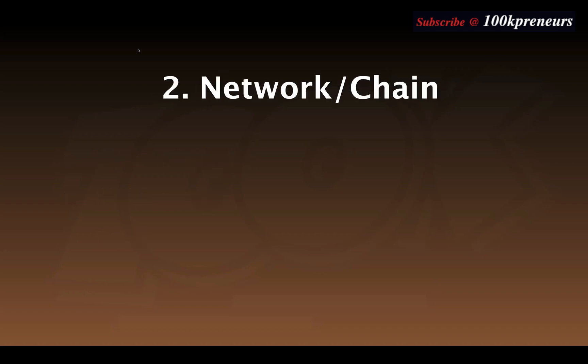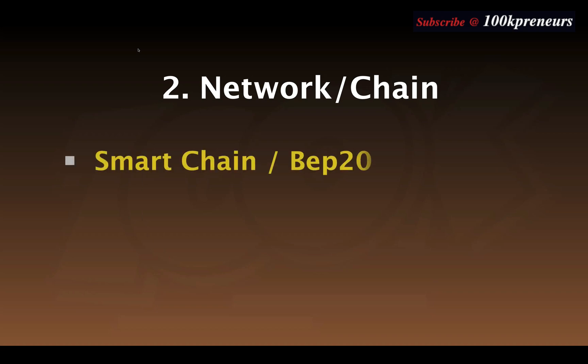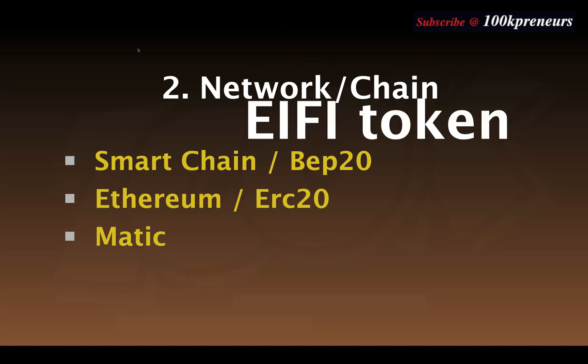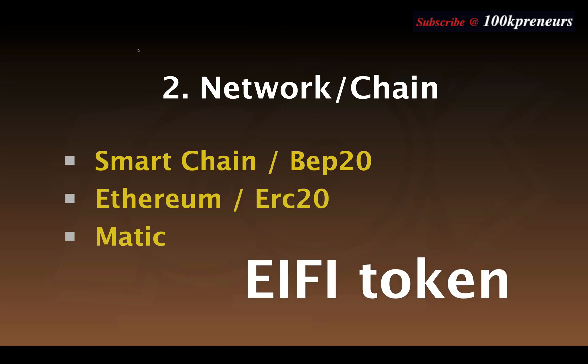After setting up your wallet, the next thing will be to find out which chain or network the token you want to swap is built on. There are different kinds of networks, such as Smart Chain for Binance tokens, Ethereum for ERC-20 tokens, Matic, and many others. For this tutorial we are going to use IFI token, which is built on Binance Smart Chain.